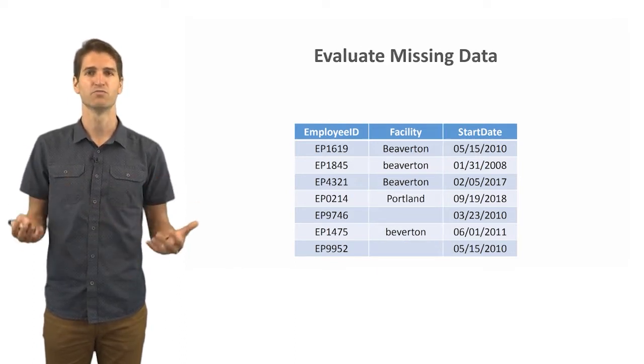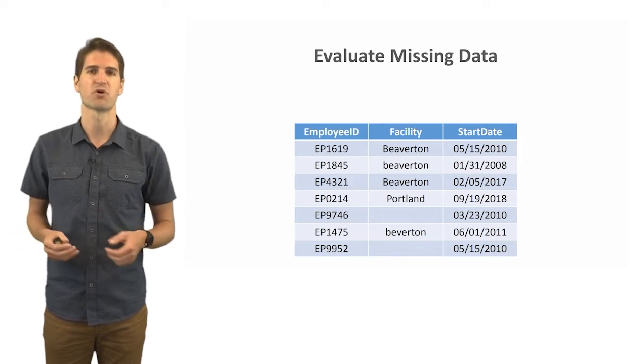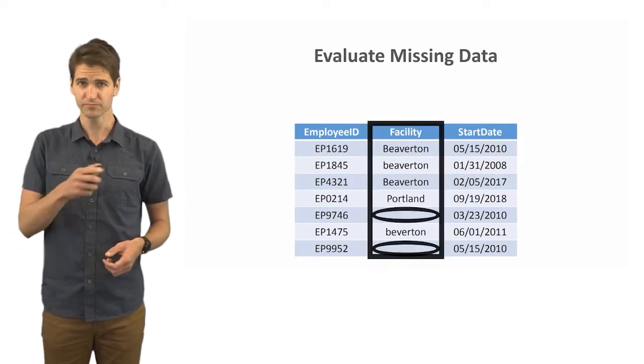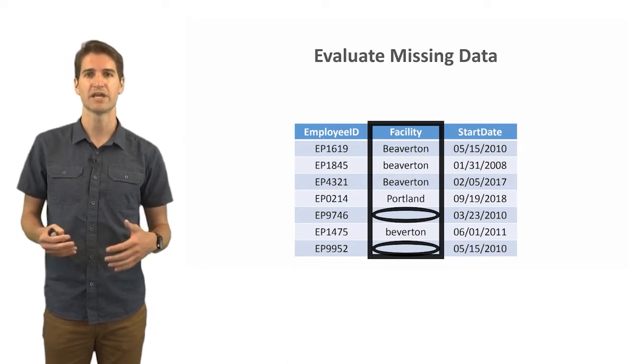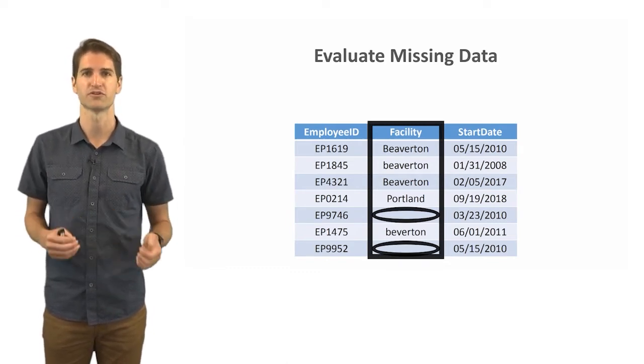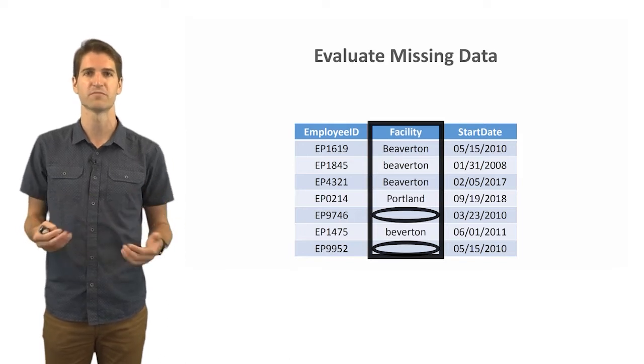Now let's consider when we evaluate missing data as part of the data cleaning process. Let's take a look at this facility variable again and notice that we have two empty entries here for two different employees so they are missing the information for the facility.